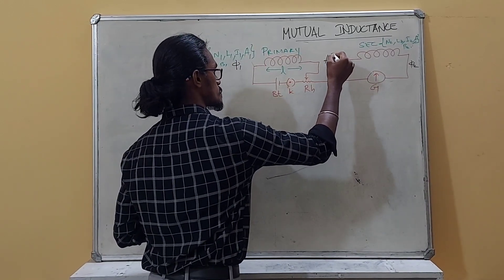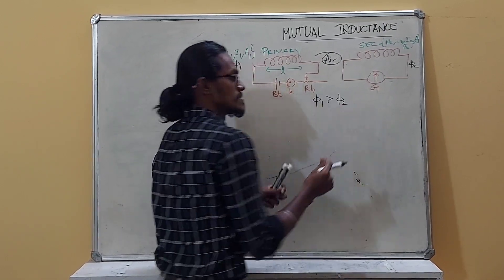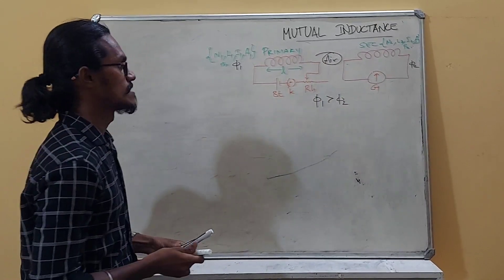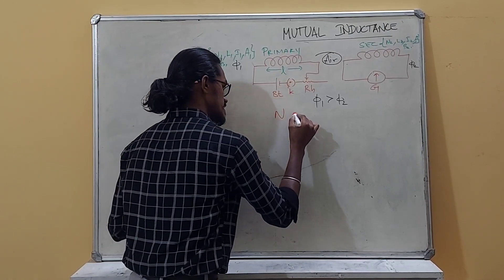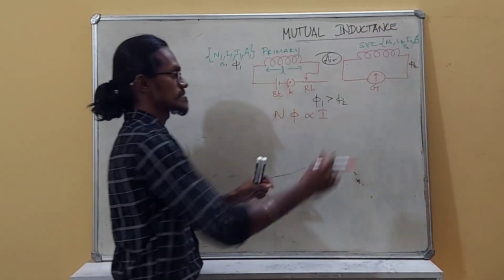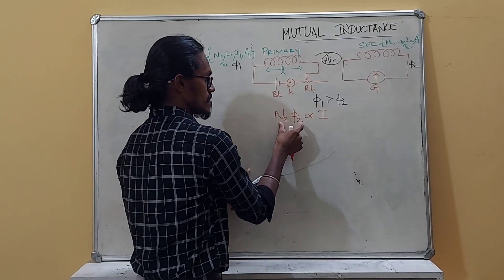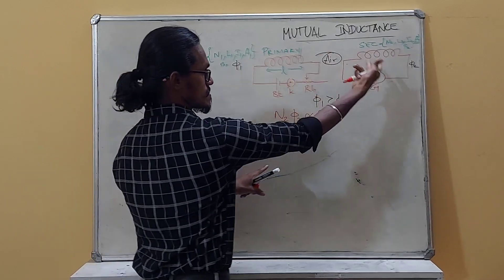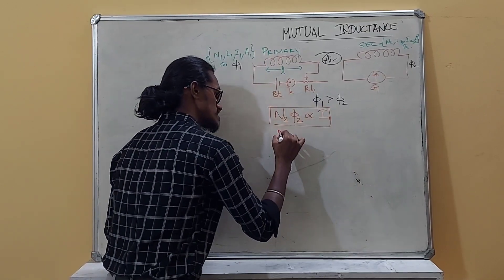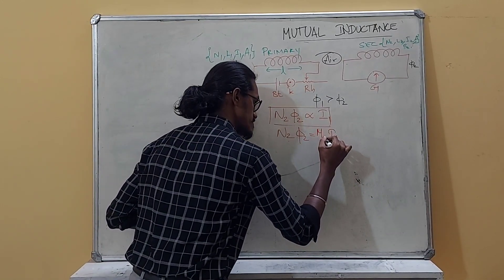Since there is an air gap between the two solenoids, φ₁ > φ₂ (some energy is lost). Using the principle of induction, Nφ is proportional to current. The flux in the secondary solenoid N₂φ₂ is proportional to the current I₁ in the first solenoid. The proportionality constant is called the coefficient of mutual inductance, M₂₁.